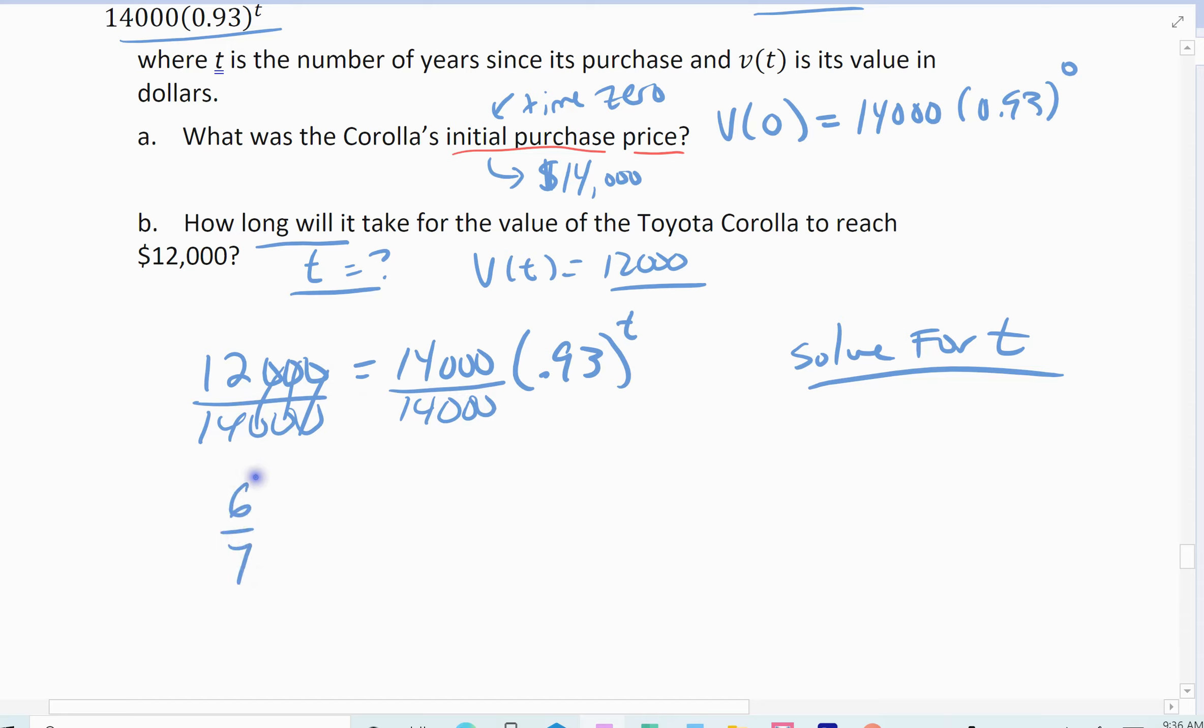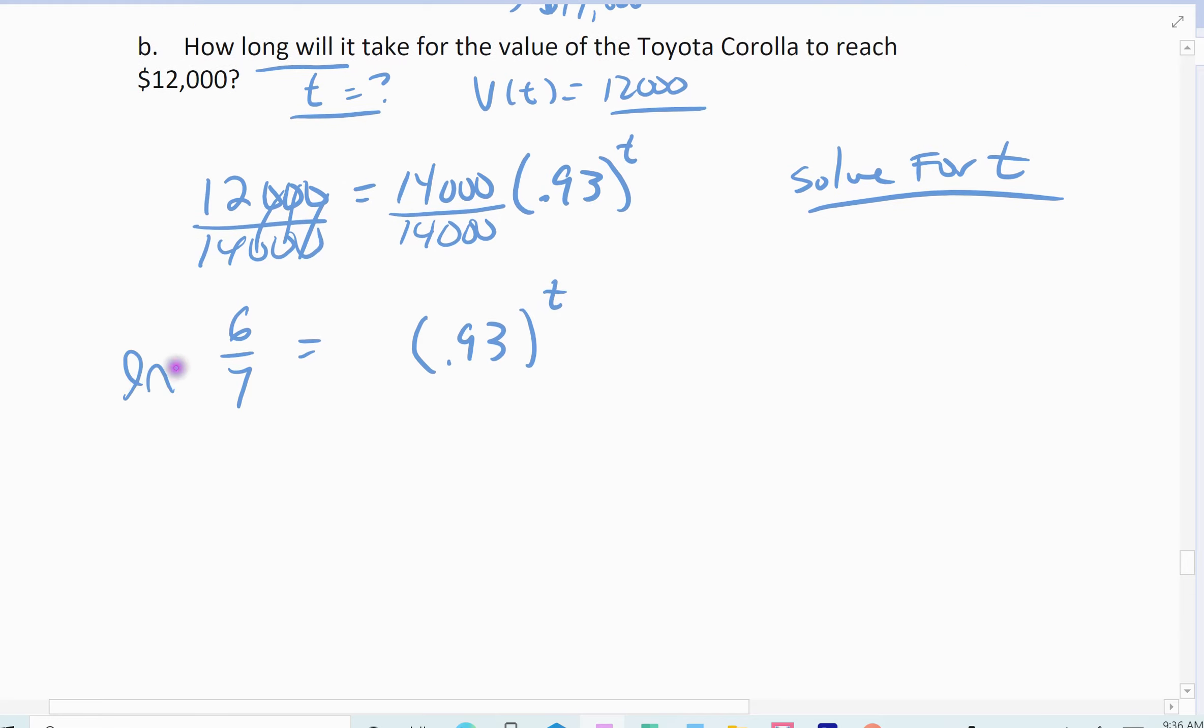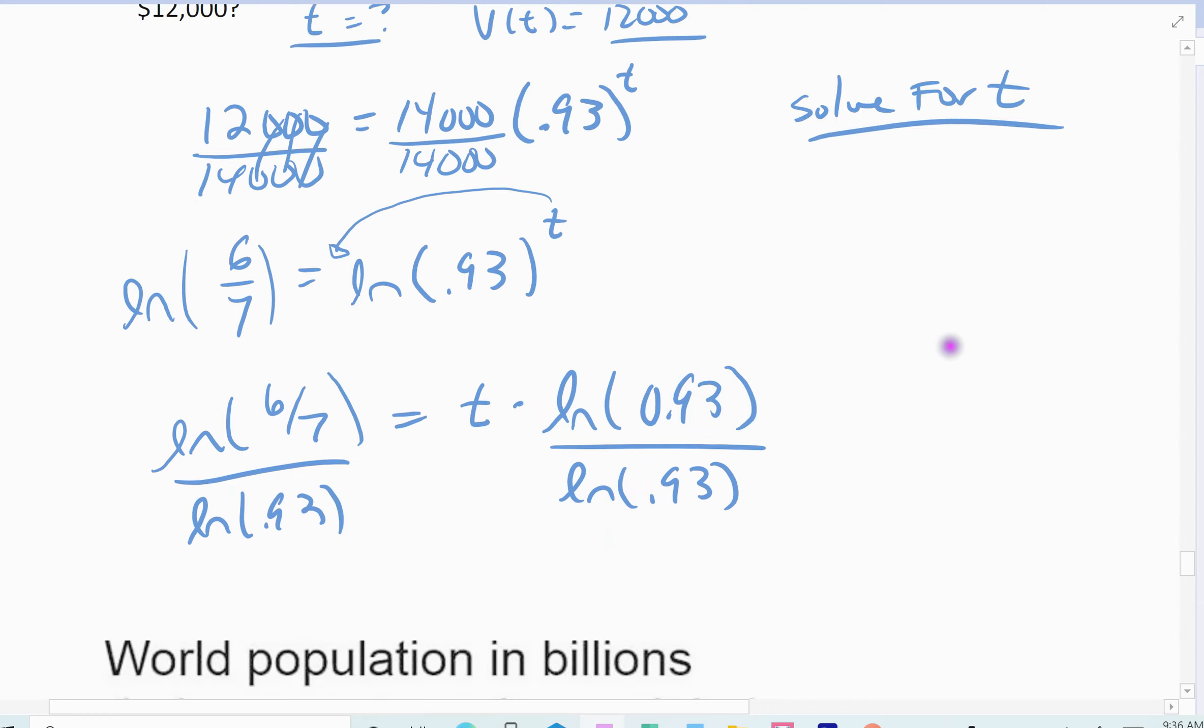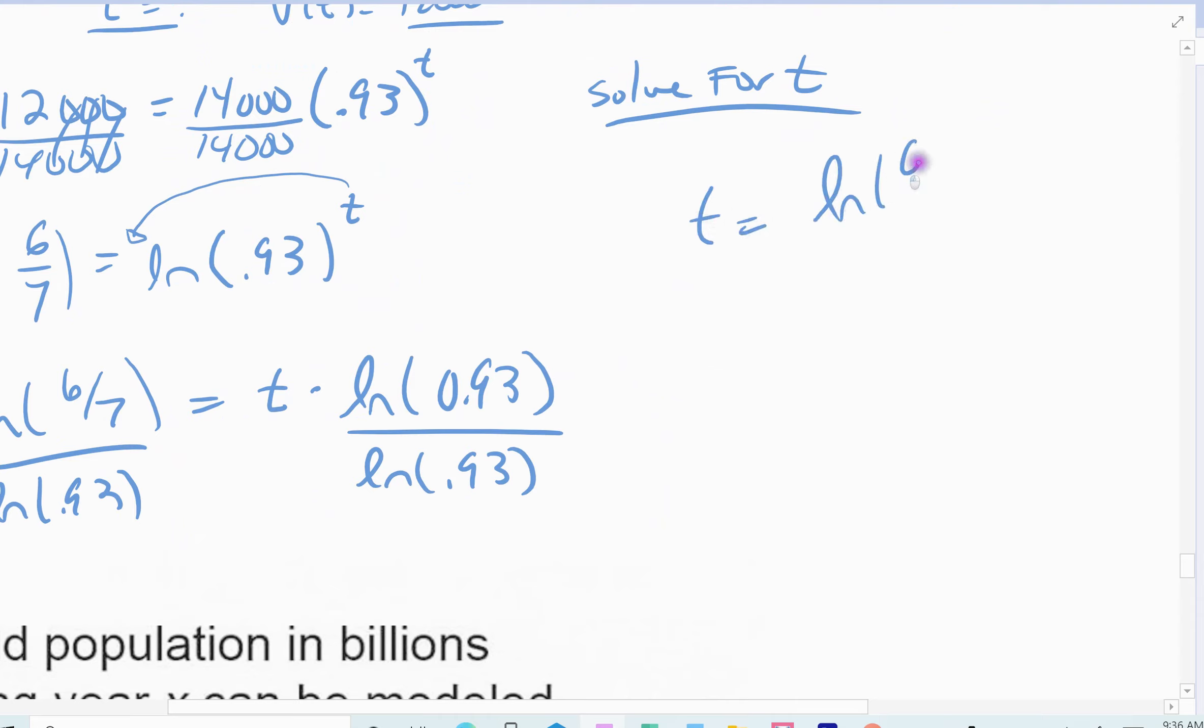That 12,000 divided by 14,000 reduces down to 6/7, right? Equals our 0.93 to the t. And then I need to unbury the time. And so I'm going to use the natural log. So I'm going to take the natural log of both sides. And I'm going to do that because I can pull my t out front when I do that. So I'm going to get the natural log of 6/7 equals t times the natural log of 0.93. Divide out by that natural log of 0.93.